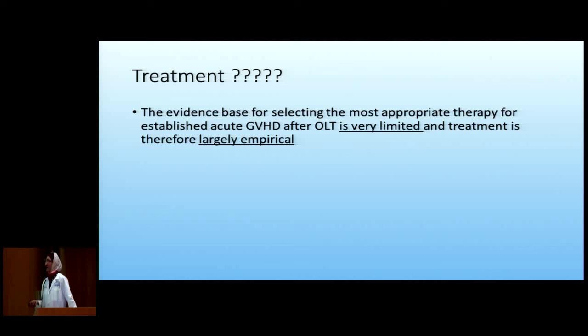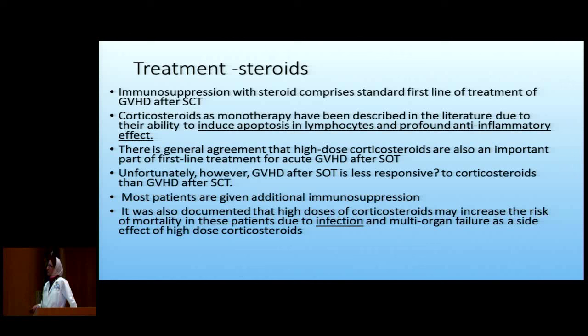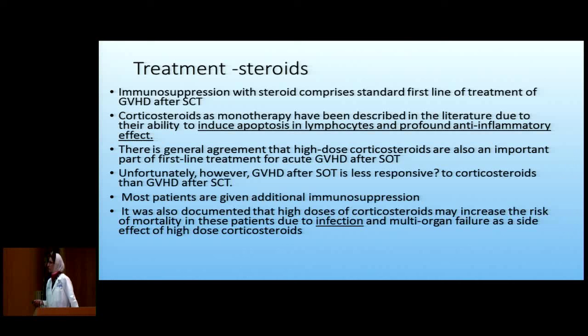Regarding treatment — unfortunately there's not a lot. It's very limited, largely empirical, all case reports and case reviews, with nothing definitive on what specific treatment to start. Steroids are the first-line treatment in stem cell transplant — they kill lymphocytes and are anti-inflammatory — so most people agree they should also be started in solid organ GVHD. Whether it's enough is not well known; some think solid organ GVHD is more resistant than stem cell transplant GVHD.